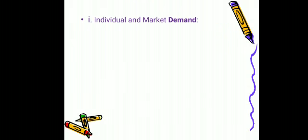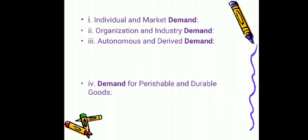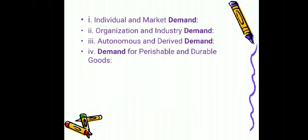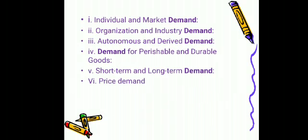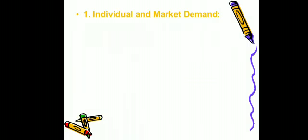Here are the types of demand: first is individual and market demand; second, organization and industry demand; third is autonomous and derived demand; fourth is demand for perishable and durable goods; fifth is short-term and long-term demand; sixth is price demand; seventh is income demand; and eighth is cross demand. First we will discuss individual and market demand.